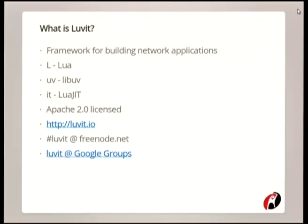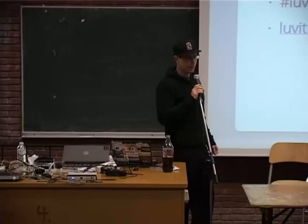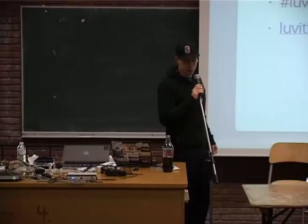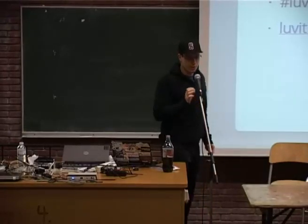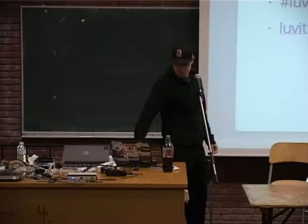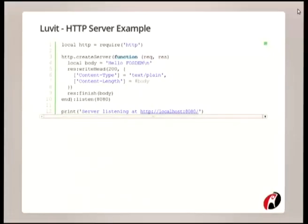The Luvit name is composed of three words. The first letter is L, which stands for Lua, which is the language you write your apps in. The second abbreviation is UV, which stands for LibUV. LibUV is the actual C library which deals with the cross-platform event loop stuff, which is also used by Node.js. And the third part stands for LuaJIT, which is a just-in-time compiler for Lua.